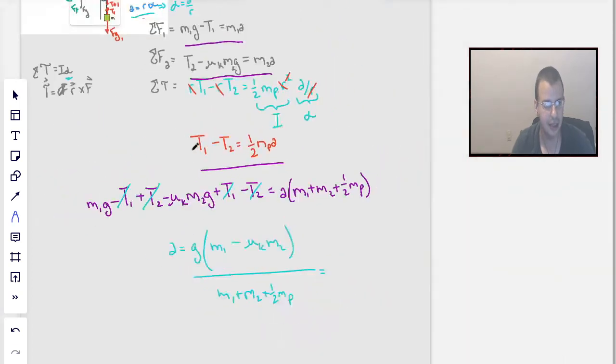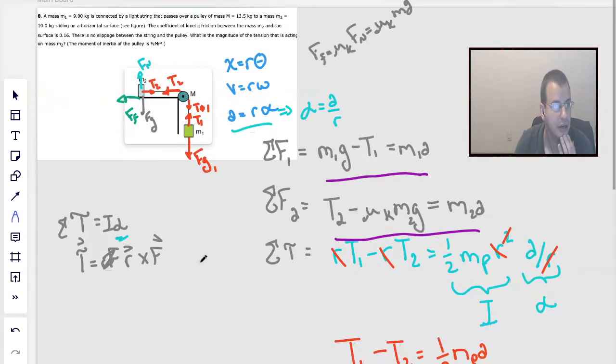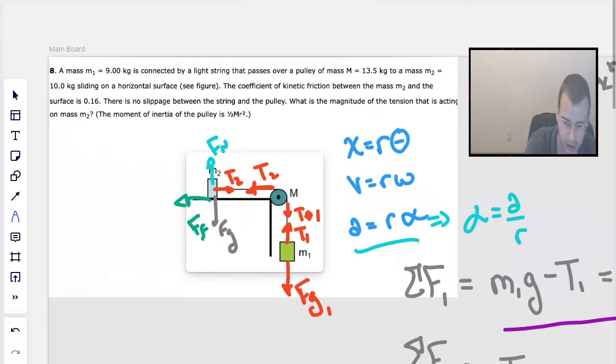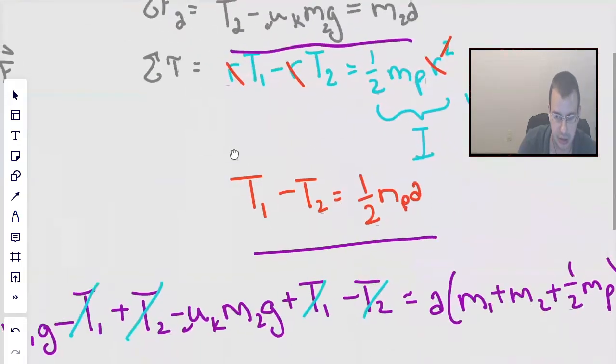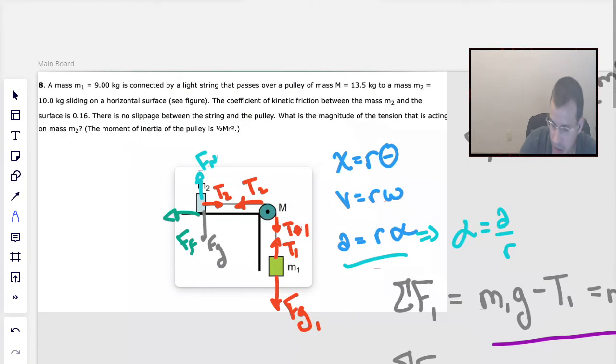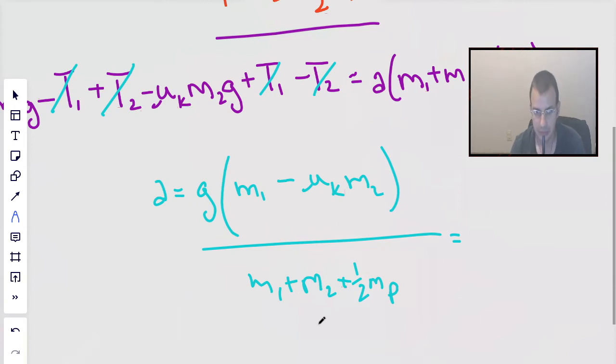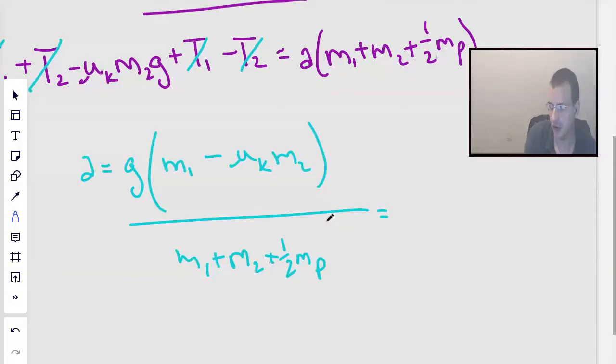Putting numbers into this and getting a calculator. We have 9.81 times the top quantity, which is mass 1 which is 9 minus the coefficient of friction which is 0.16 times mass 2 which is 10, divided by 9 plus 10 plus 13.5 divided by 2. Yeah, that looks reasonable. I get an answer of 2.82.